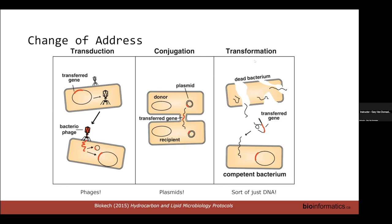The last type of lateral gene transfer is transformation, where a dead bacterium releases its DNA into the environment. Certain bacteria — not all of them — especially if they are in a certain phase of their life cycle, can become what's called competent, meaning they can uptake that DNA and through a process of recombination may integrate it into their own genome.